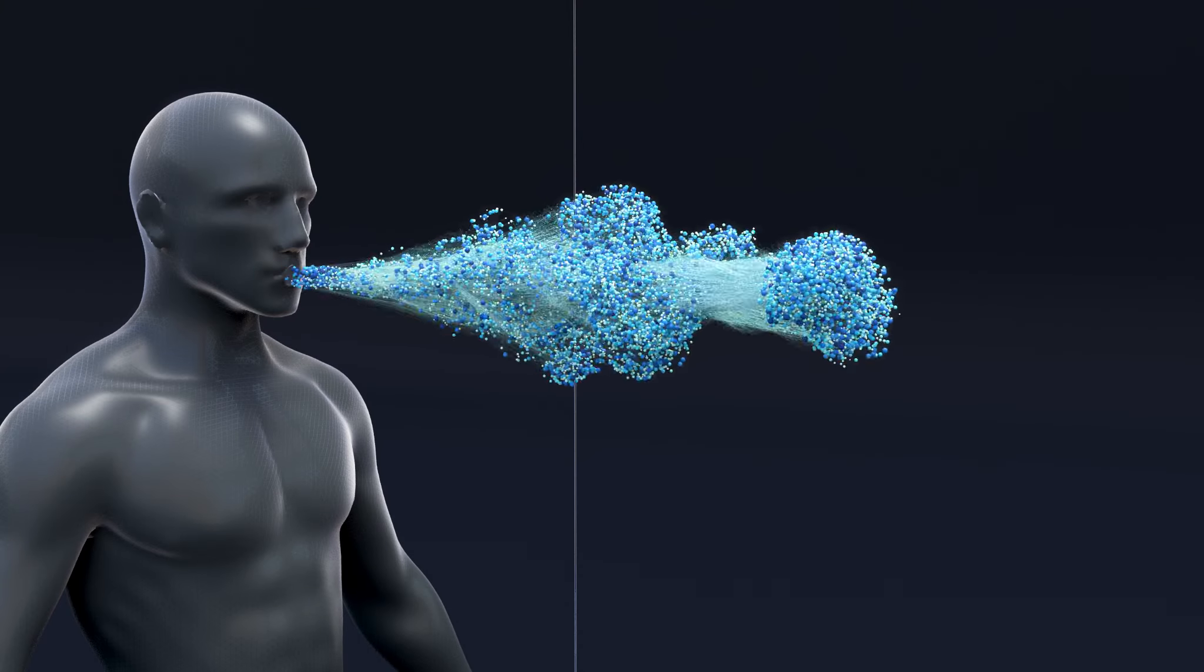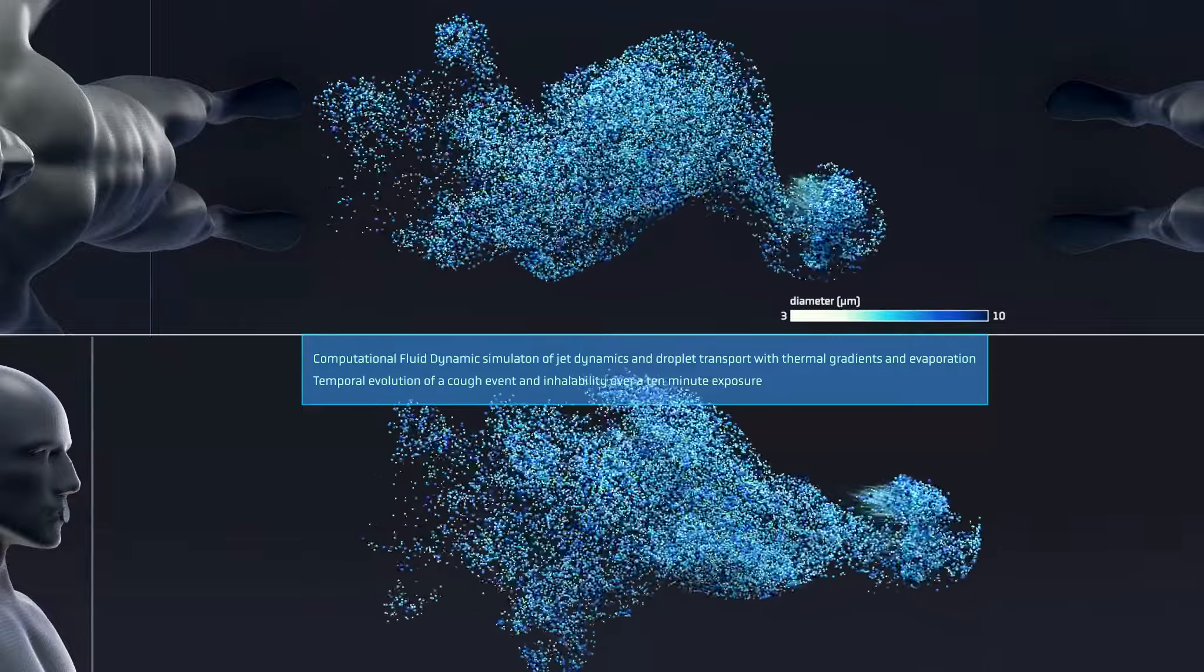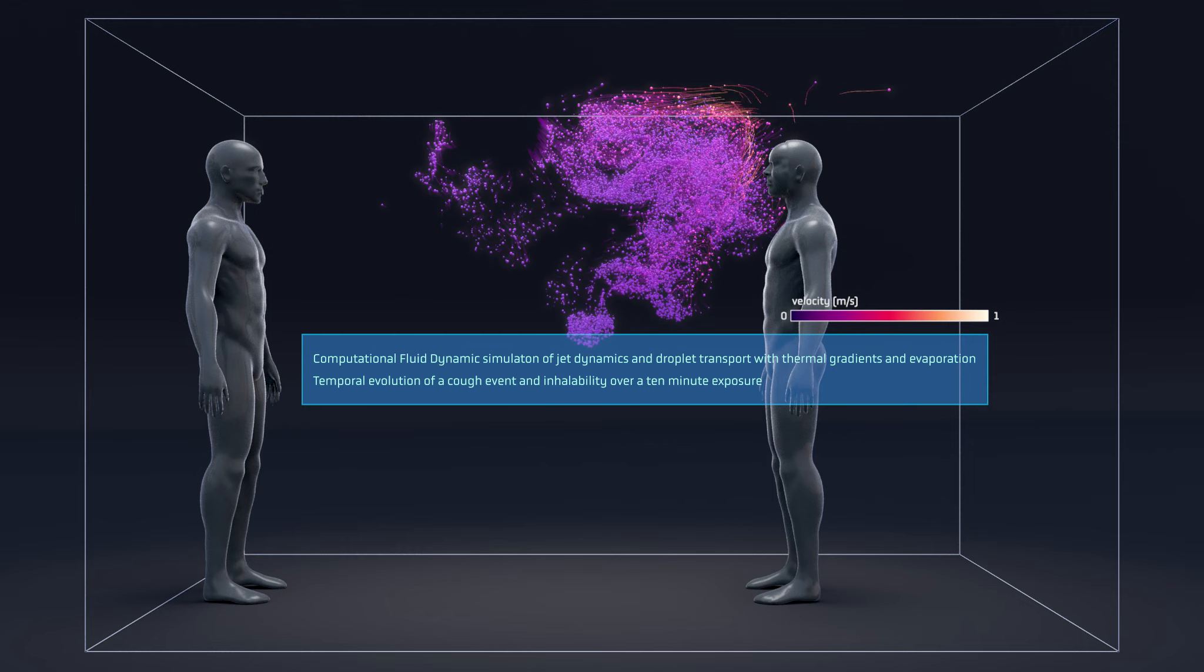Using supercomputers, we can look at the spread of the virus as it travels through the air from one person to another, and study the effectiveness of masks, air conditioning, and social distancing.